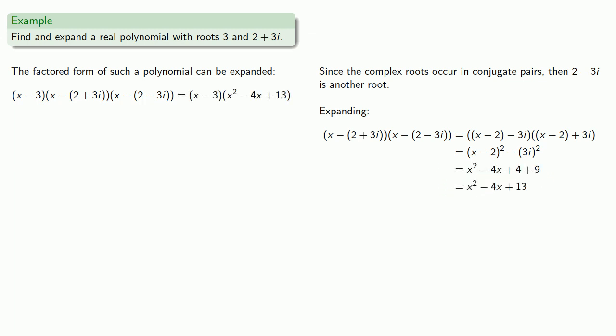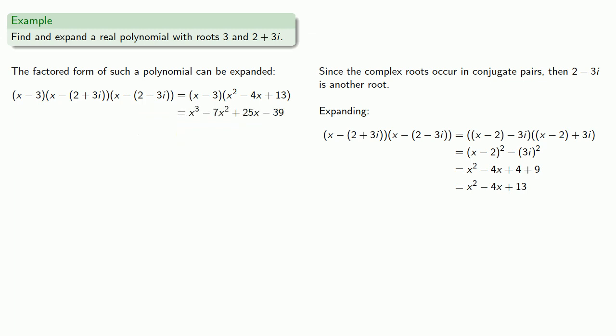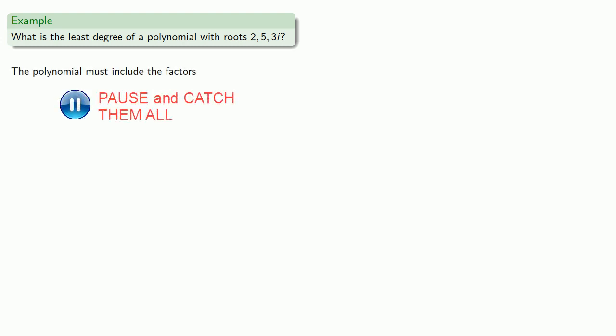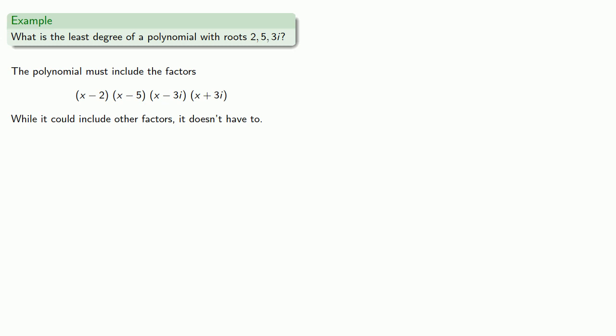Then we expand once again to get our final expanded polynomial. Sometimes we might not need the actual expanded polynomial — we might just want to know the least degree of a polynomial with roots 2, 5, and 3i. The polynomial must include corresponding factors. You can't leave a complex root by itself; you also have to include the conjugate, so we must have a factor of x plus 3i as well. Since we're looking for the least degree polynomial, this means our polynomial must be of at least the fourth degree.